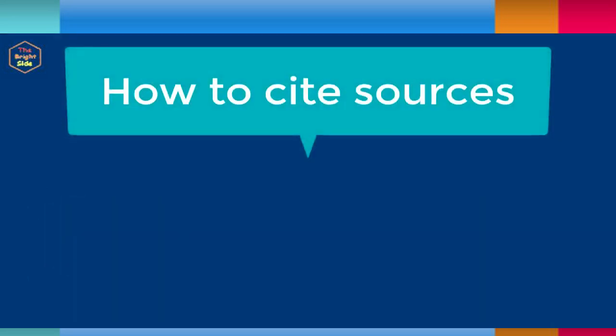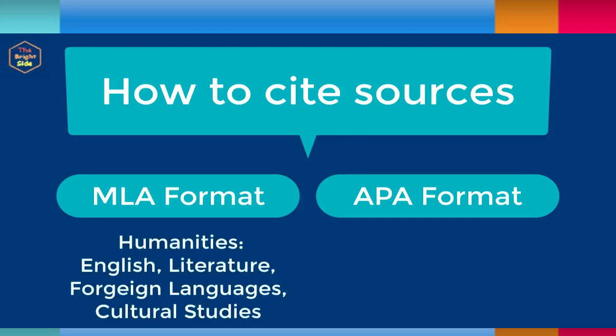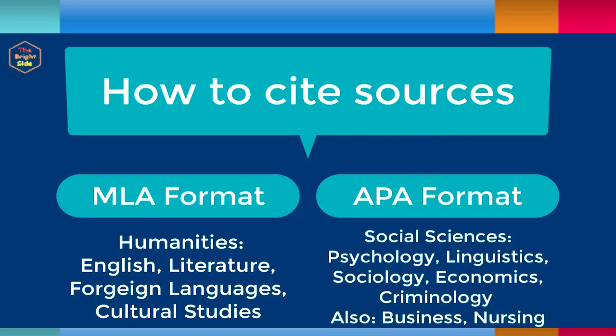When you cite your sources, you will follow the guidelines of a particular citation style, such as MLA or APA citation style. Check your assignment details, the course syllabus, or ask your professor which citation style should be used. Typically, MLA format is used in the disciplines of humanities, such as English, literature, foreign languages, and cultural studies. APA format is typically used in the social sciences, including psychology, linguistics, sociology, economics, and criminology, as well as in business and nursing.